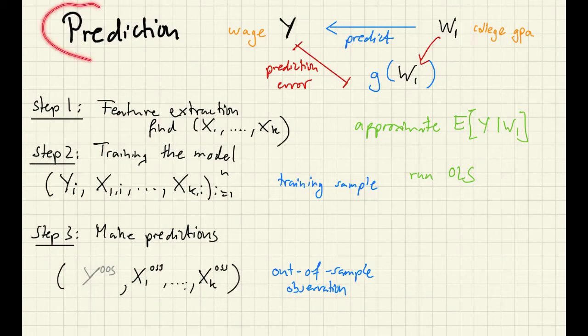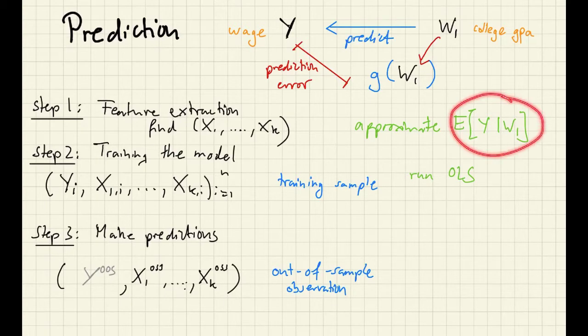We've already covered the basics of prediction. We know that there are three steps. Step one, feature extraction, and we understand that we have to extract features that allow us a flexible approximation of the conditional expectation.